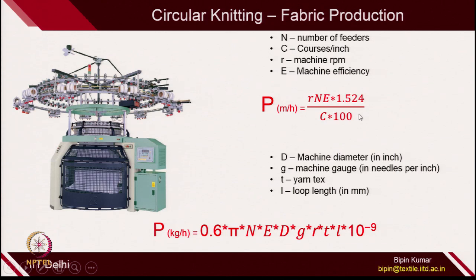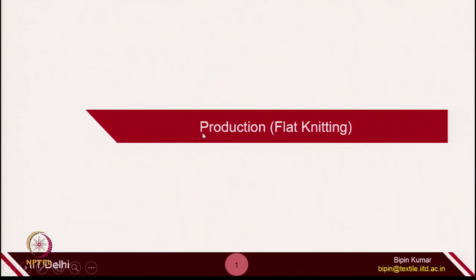These formulas are very useful in finding the production capacity of the machine if you know certain variables related to machines. In the case of circular knitting, mostly the cylinder is rotating, so we have RPM as one of the machine variables. But now, let's see the production in flat knitting.